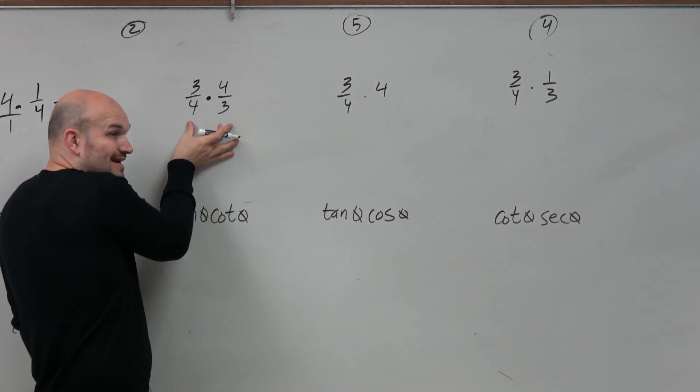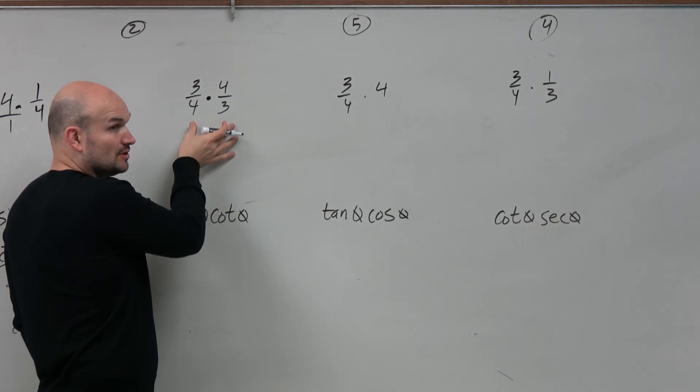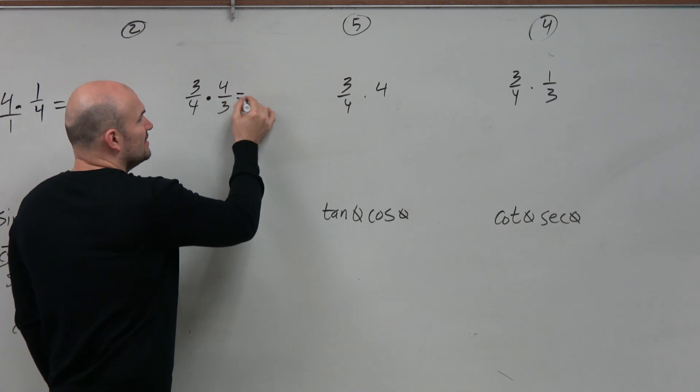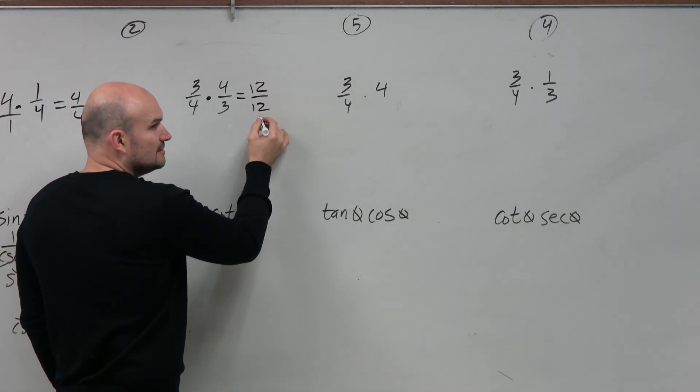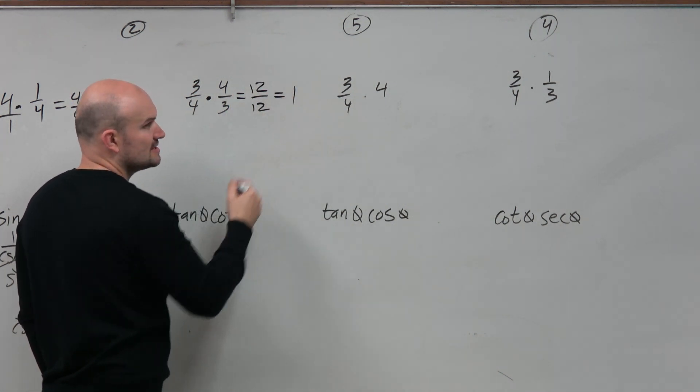Now, hopefully you guys recognize this is a fraction multiplied by its reciprocal. So we know the answer is 1. But if we get stuck, we know we can still multiply it across and get 1, right?